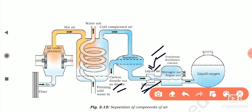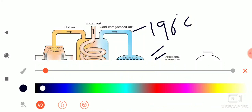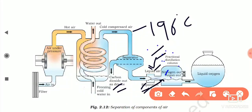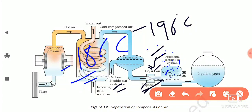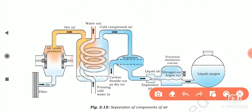As we slowly warm the liquid air, nitrogen — with a boiling point of −196°C — starts boiling first and is separated and collected. Then argon, with a boiling point of −186°C, boils and is collected. After all other gases are separated out, oxygen — which has the highest boiling point of −183°C — is left behind and collected separately.